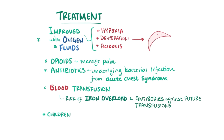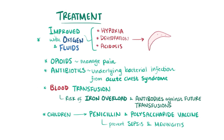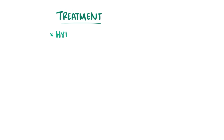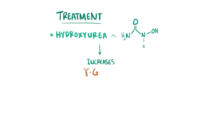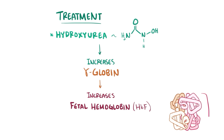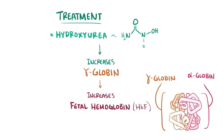Children with sickle cell typically get prophylaxis with penicillin and an additional polysaccharide vaccine against Streptococcus pneumoniae to help prevent sepsis and meningitis with encapsulated bacteria. Another preventative medicine is hydroxyurea, which works by increasing the amount of gamma globin, which results in more fetal hemoglobin, or HbF. Fetal hemoglobin is made up of two alpha and two gamma globin chains, so it does not include the mutated beta globins. Since it cannot polymerize, it gets in the way of HbS polymers being made and prevents sickling.